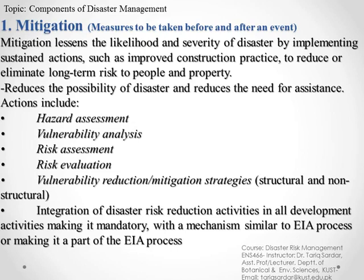Mitigation also includes reduction of the possibility of disaster and reduction of the need for assistance. The steps of mitigation can be used as an assessment process: first, we assess the hazard or risk to a specific area; after that, vulnerability analysis — how much the area or people are vulnerable to that specific disaster or event; then risk assessment — how much risk is possibly posed by that disaster in that specific area.